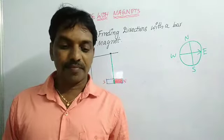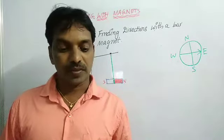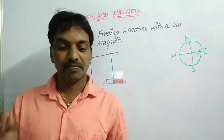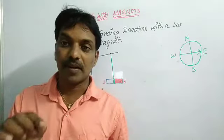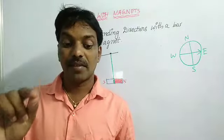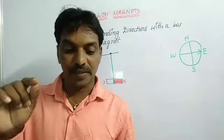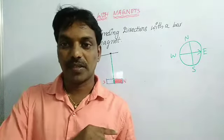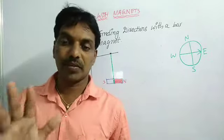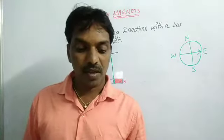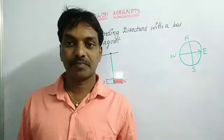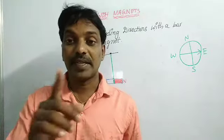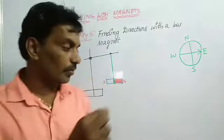Mark the end that points toward the north with some color. Already there is a white color — that is north. Disturb the bar magnet, again wait for some time. What does this mean? It is not marking on the bar magnet itself — when it comes to rest, we keep the mark on the area where it points.